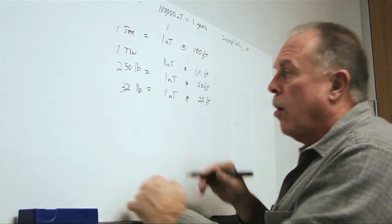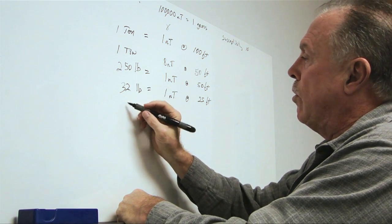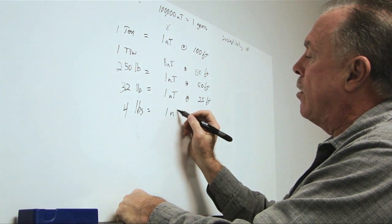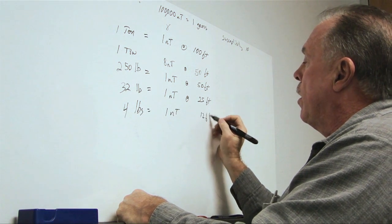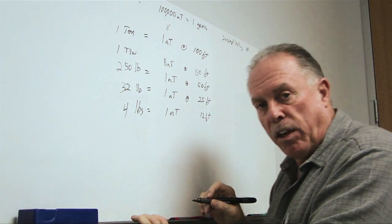We can go further. Let's take this down to four pounds equals one nanotesla at 12 feet. Now, we can see something that is grapefruit-sized at a range of 12 feet.